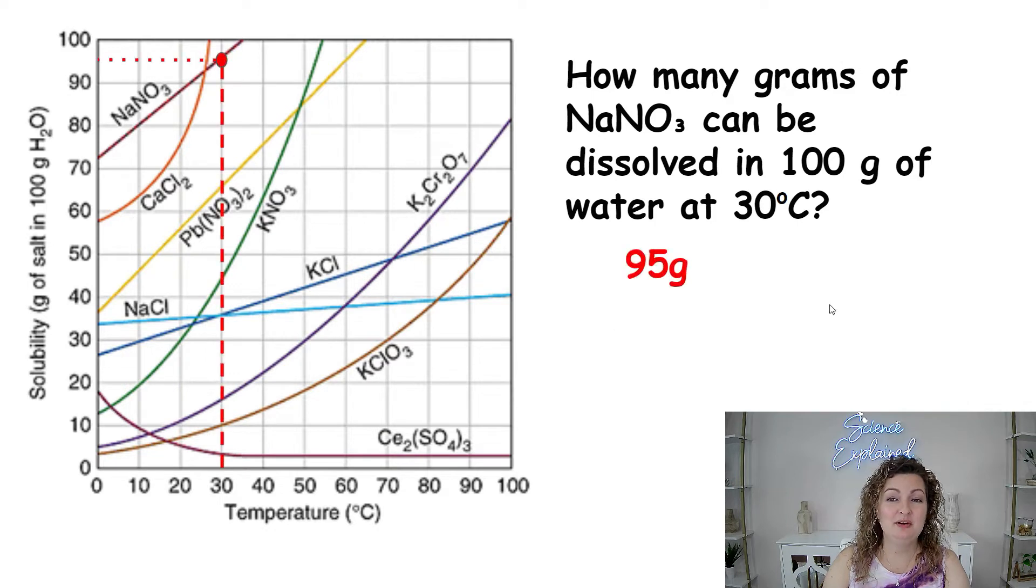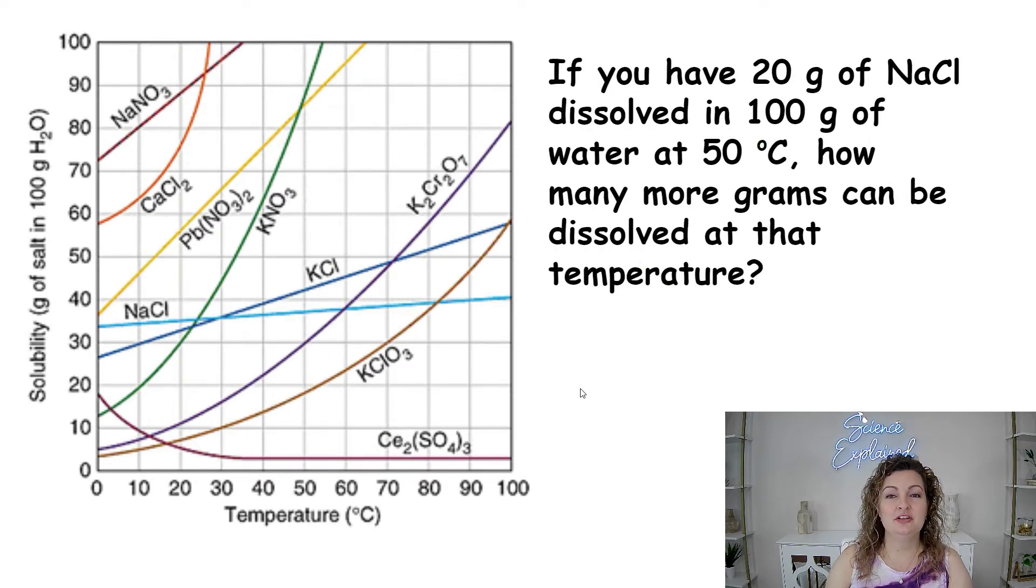All right, let's check it out. Remember that 100 grams of water is referring to your graph. And then we want to find our NaNO3 and that is this deep burgundy line up here. And we are at 30 degrees. So 30 degrees go straight on up until you hit the burgundy line. And we need to see how many grams will be dissolved. So if we go straight over, we are at 95 grams can be dissolved there. And actually that is at its saturation point. That's why it can be dissolved there. Let's try the next one.